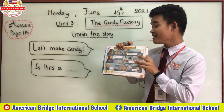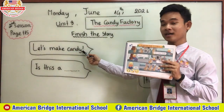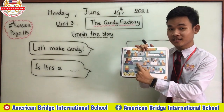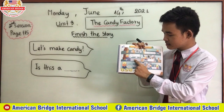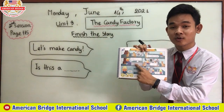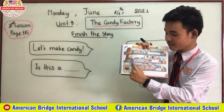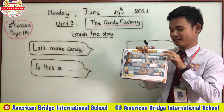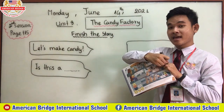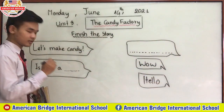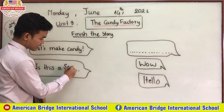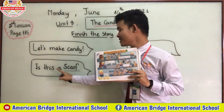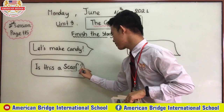Monty said 'Let's make candy!' Now we have to add the candy strawberry, so we have to tidy the clothes. Monty asked — what sticker did you add here? What did you hear? Monty is holding a scarf. Monty said 'Is this a scarf?' Add the sticker, and teacher will write: scarf — S, C, A, R, F.